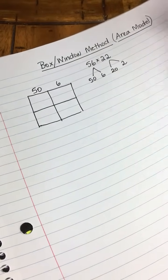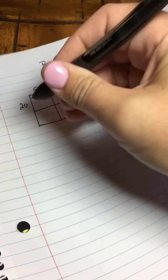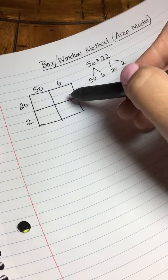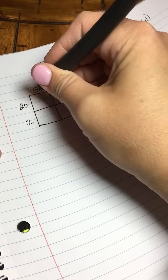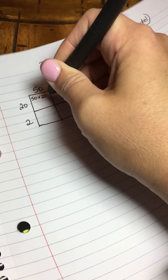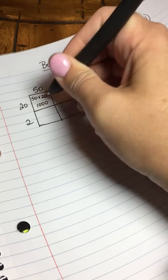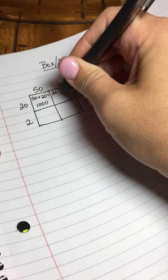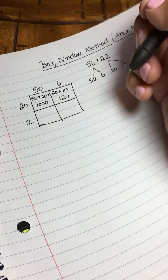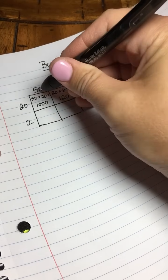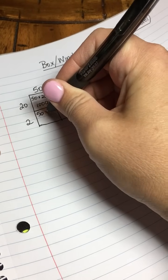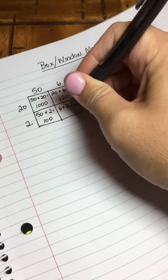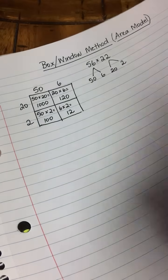We're going to use these expanded forms to write around our grid. I'm going to put the 56 on top, so we'll put 50 and 6, and I'll put the 22 on one side. Now we multiply the numbers that meet in each space on our box or window. In this space, we're going to multiply 50 times 20, which gives us 1,000. Here we'll multiply 20 times 6, which gives us 120. Down in the bottom left, we multiply 50 times 2 to get 100, and in this one we multiply 6 times 2 to give us 12.